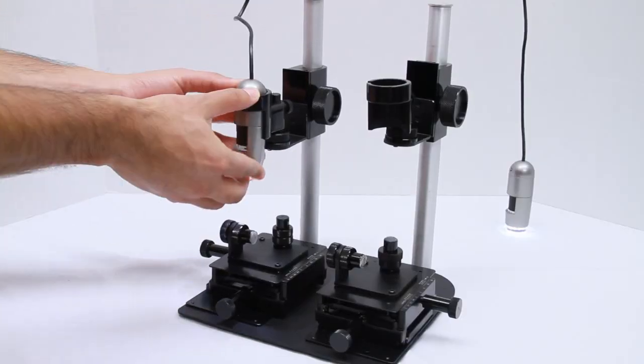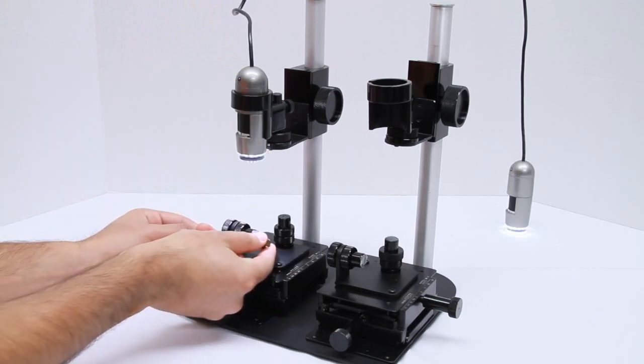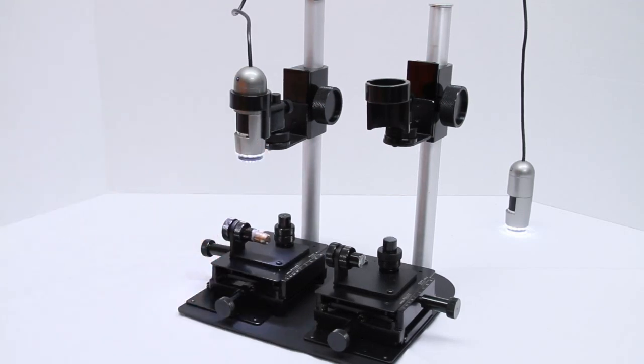After securing the Dynolite into each holster, you can place your subject, in this case a bullet secured with wax, onto the rotation stage.